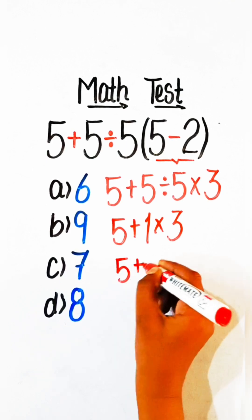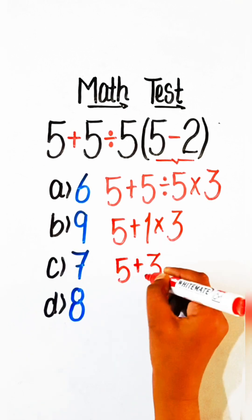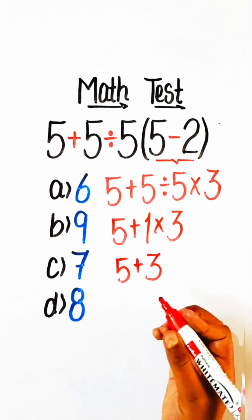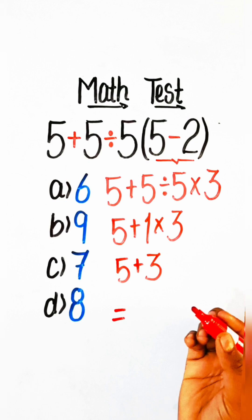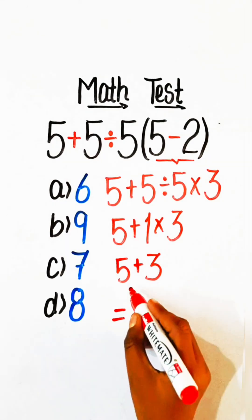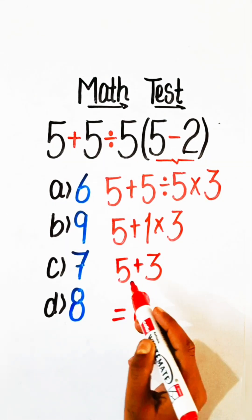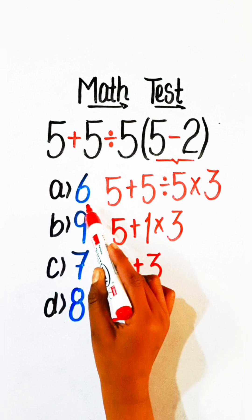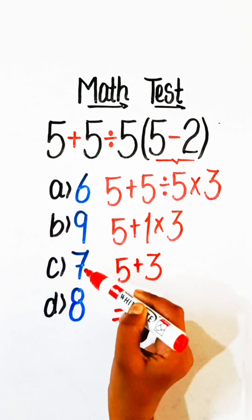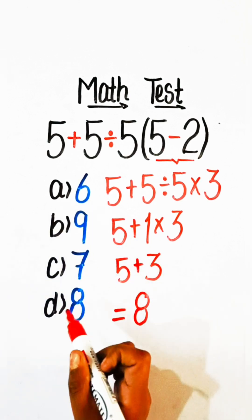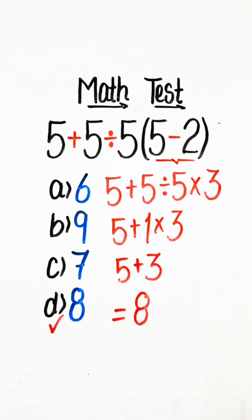5 plus 3 equals 8. From the options — 6, 9, 7, or 8 — Option D: 8 is our correct answer. Please subscribe to the channel.